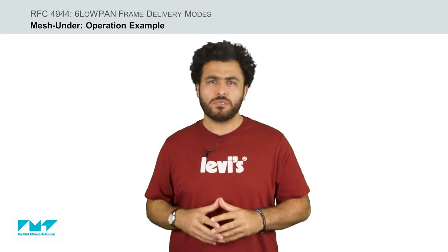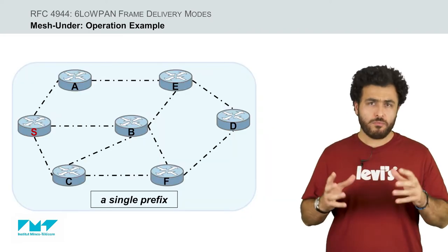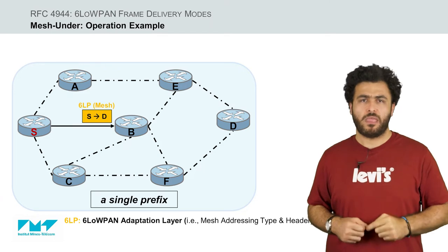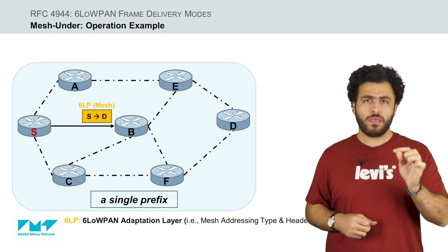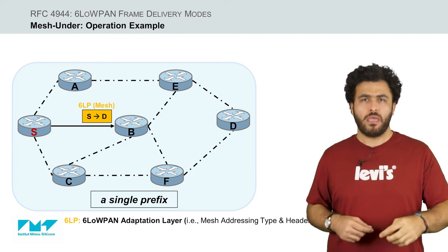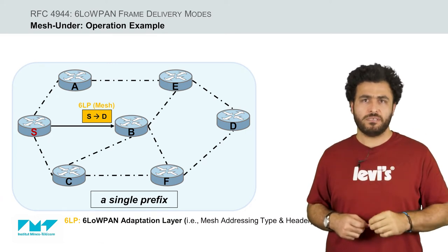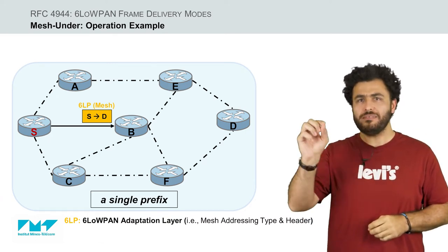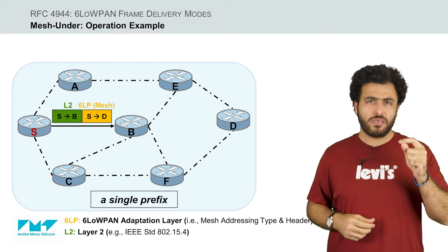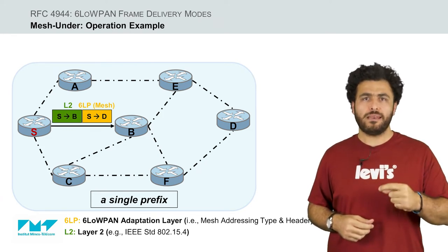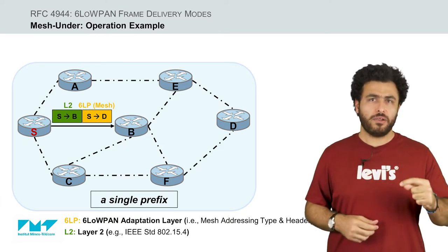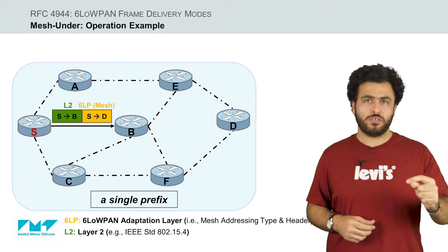Let's take an example to see how it works. Let's assume that node S uses the mesh under approach to deliver a frame. Then it must include a mesh addressing header with the originator's link layer address set to its own, and the final destination's link layer address set to the frame's ultimate destination, in this case node D. Furthermore, it sets in the layer 2 header's source address field its own link layer address, and includes the forwarder's node B link layer address in the layer 2 header's destination address field.